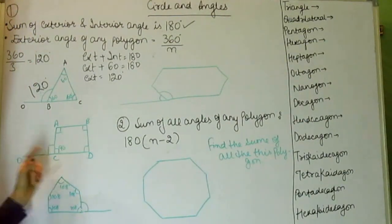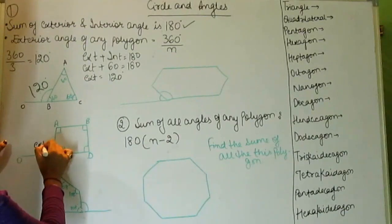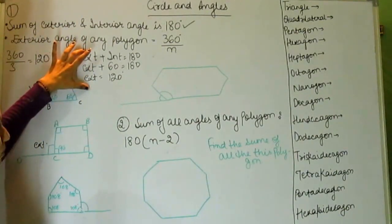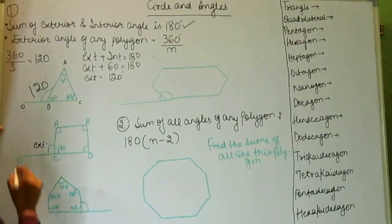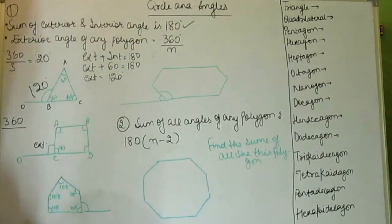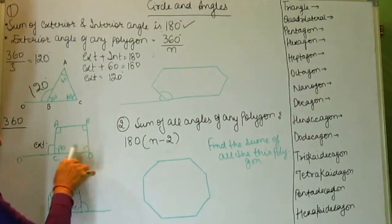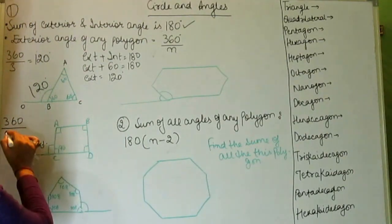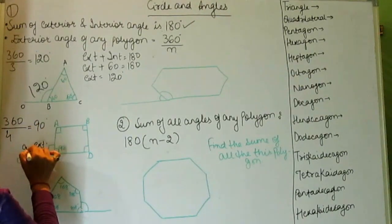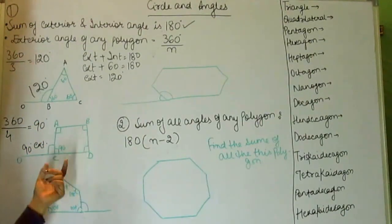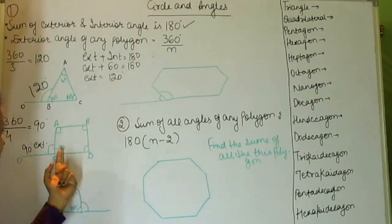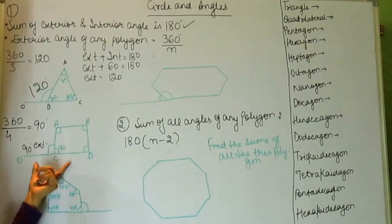Next, we have a square and we have to find its exterior angle. Using the formula 360 divided by N, and a square has 4 sides, so 360 divided by 4 equals 90 degrees. We can check: exterior plus interior equals 90 plus 90, which is 180 degrees. Our answer is correct.